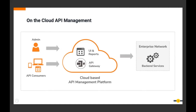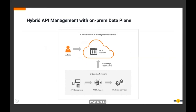This brought us to what hybrid API management is. In the hybrid model, we basically start separating out the control plane and the data plane. The control plane is still on that central cloud, but the enterprise network is where the data plane is deployed. Users who will create APIs, do lifecycle management, and publish them will still go to that central cloud and do all those activities on the control plane.